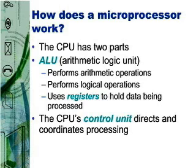The speed specifications that you see in a computer ad indicate the speed of the microprocessor clock, a timing device that sets the pace for executing instructions. Most computer ads specify the speed of a microprocessor in megahertz or gigahertz. Megahertz, typically written as MHz, means millions of cycles per second.